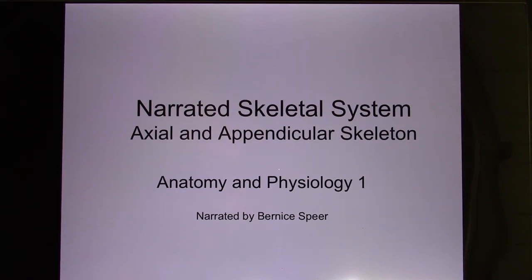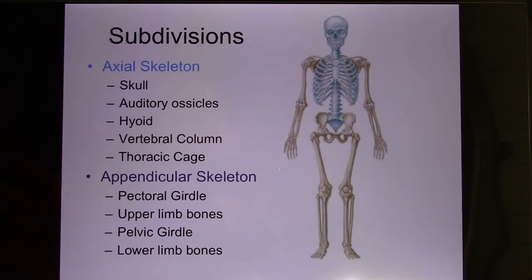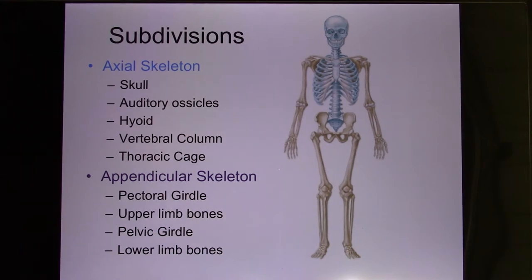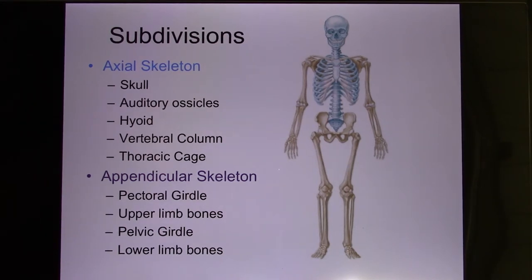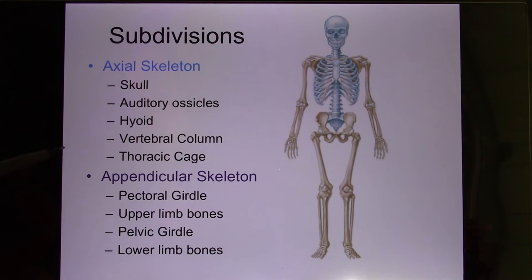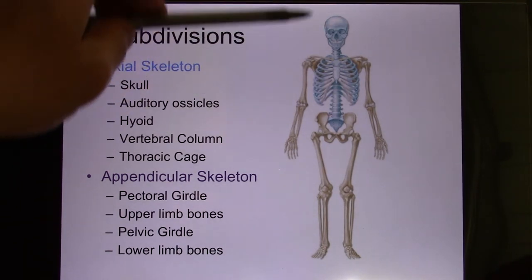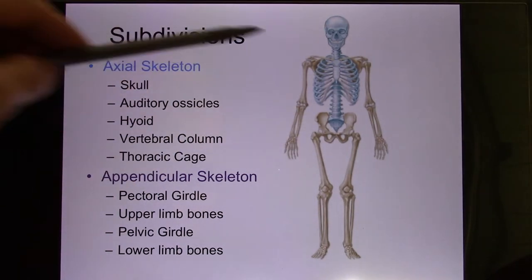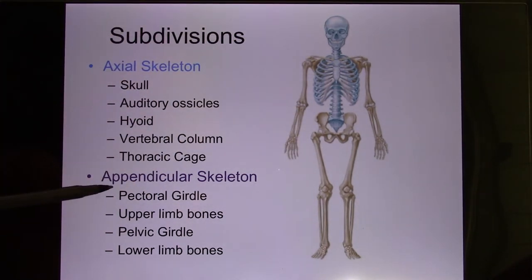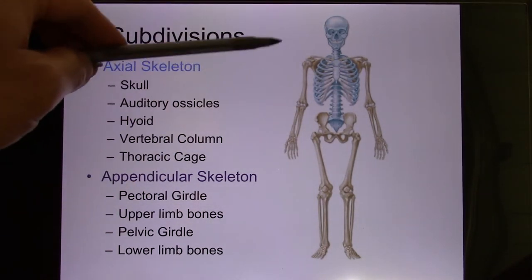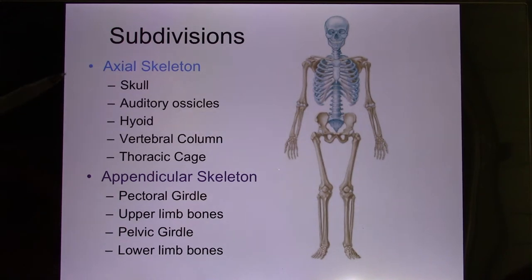We're in the skeletal system 2. The body's 206 bones can be divided into the axial and appendicular. The axial bones are those in the center, and the appendicular bones are your limb bones.